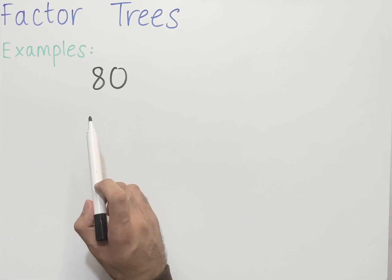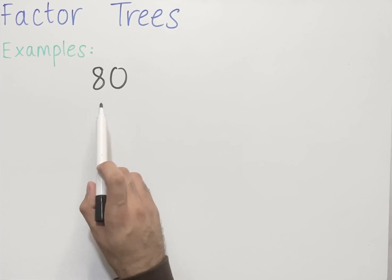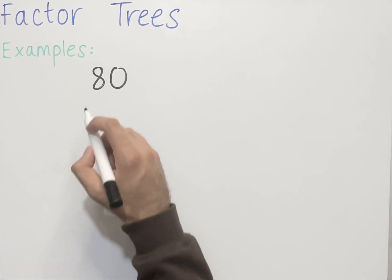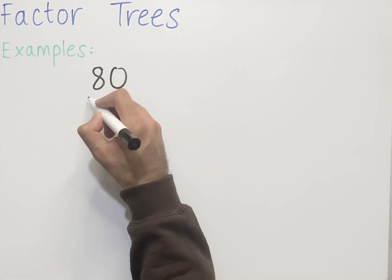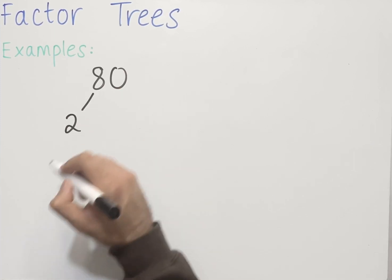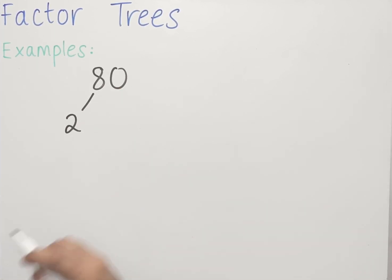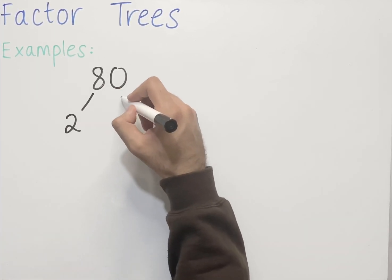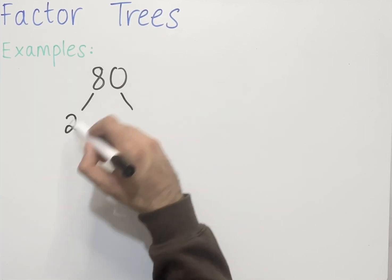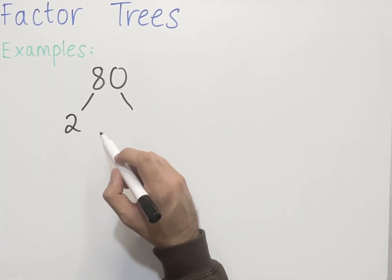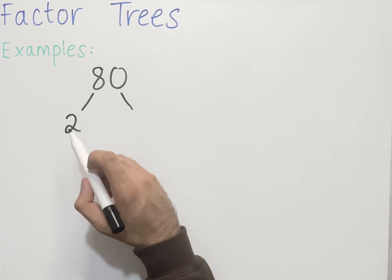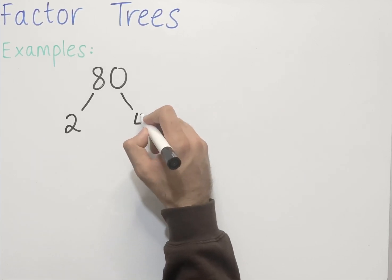If we start with the number 80, the way we construct a factor tree is the following. We start with two numbers that multiply to make 80. The first number that comes to mind is 2. 2 multiplied by 40 gives us 80. So we label two branches coming out from 80 with the two numbers we found: 2 and 40.